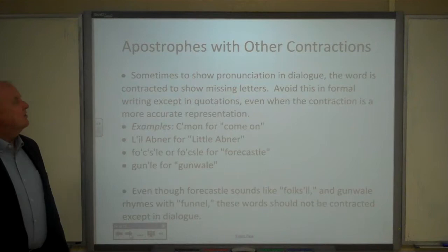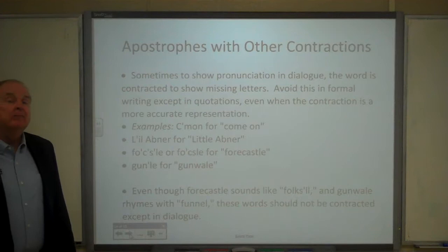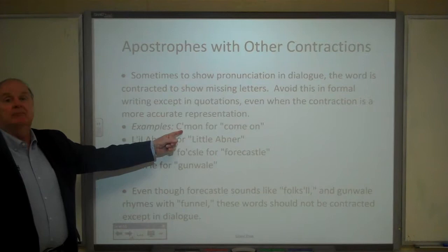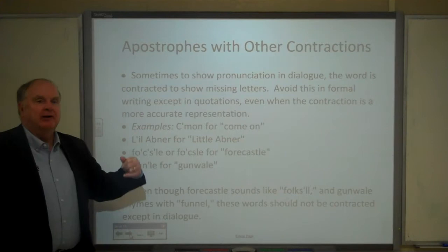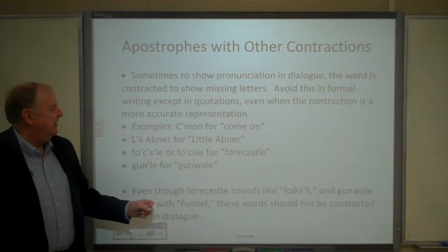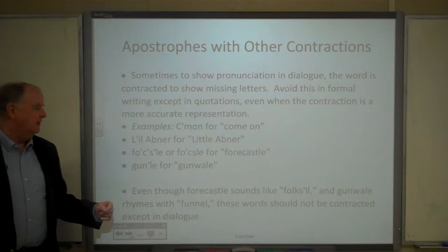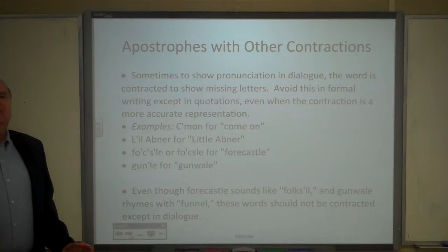Sometimes, to show pronunciation in dialogue, a word is contracted to show missing letters. Avoid this in formal writing except in quotations. So in comics you sometimes see C'mon for come on. Lil Abner — the comic strip — should be L-I apostrophe L, for Little Abner. Sometimes you'll see forecastle spelled with an apostrophe to indicate the way it's pronounced — 'foc'sle.' Same with gunwale, which rhymes with funnel, sometimes spelled with an apostrophe. But I would avoid contracting these words except in dialogue.